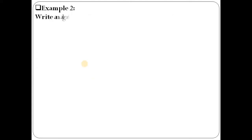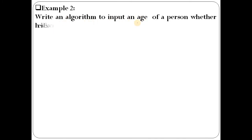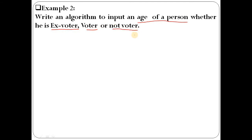Now we are going to another example — Example 2. Write an algorithm to input the age of a person and determine whether he is an ex-voter, a voter, or a non-voter. First you need to understand what we will do and how to write this algorithm. You have to input the person's age — a number — and then check whether that person is an ex-voter, voter, or non-voter using multiple conditions.